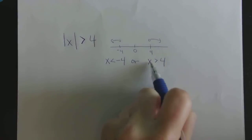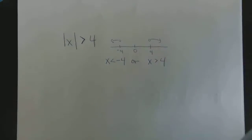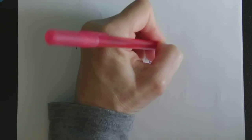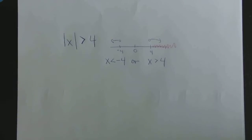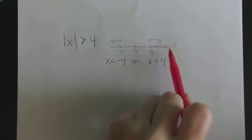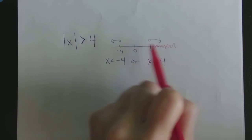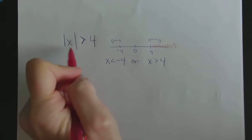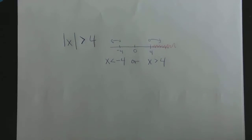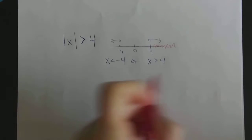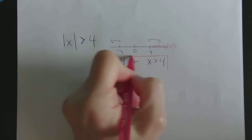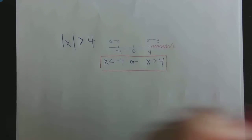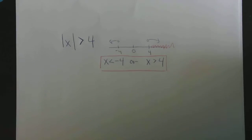So the solution is: any number less than negative 4, because that puts me more than 4 away from 0, or any number greater than positive 4. For example, 50 works because 50 is more than 4 away from 0. That's the answer to Example 1.